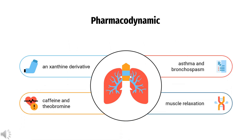Pharmacodynamics: Theophylline, a xanthine derivative chemically similar to caffeine and theobromine, is used to treat asthma and bronchospasm. Theophylline has two distinct actions in the airways of patients with reversible asthmatic obstruction: smooth muscle relaxation (i.e., bronchodilation) and suppression of the response of the airways to stimuli (i.e., non-bronchodilator prophylactic effects).